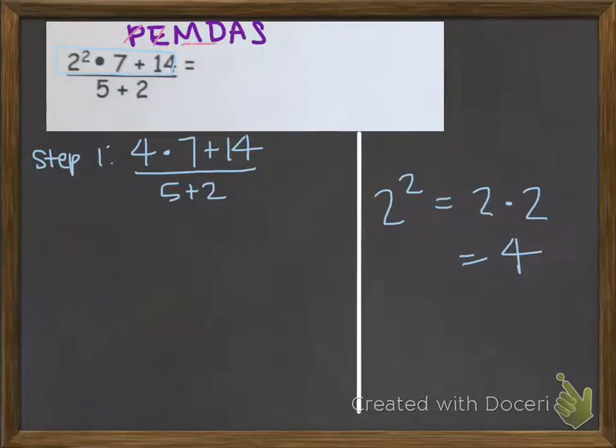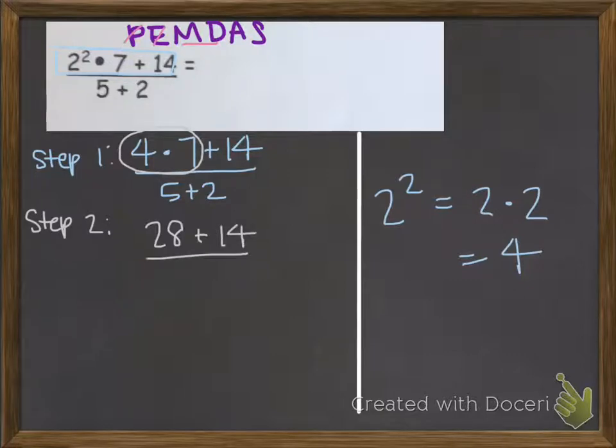Now I'm going to look for multiplication and division. If I see any multiplication and division, that's what I need to solve. Well, as I look, I see 4 times 7 right here. So that's what I need to solve in step 2. 4 times 7 is 28. So I'll write that, and then I need to write everything else exactly as it was before.